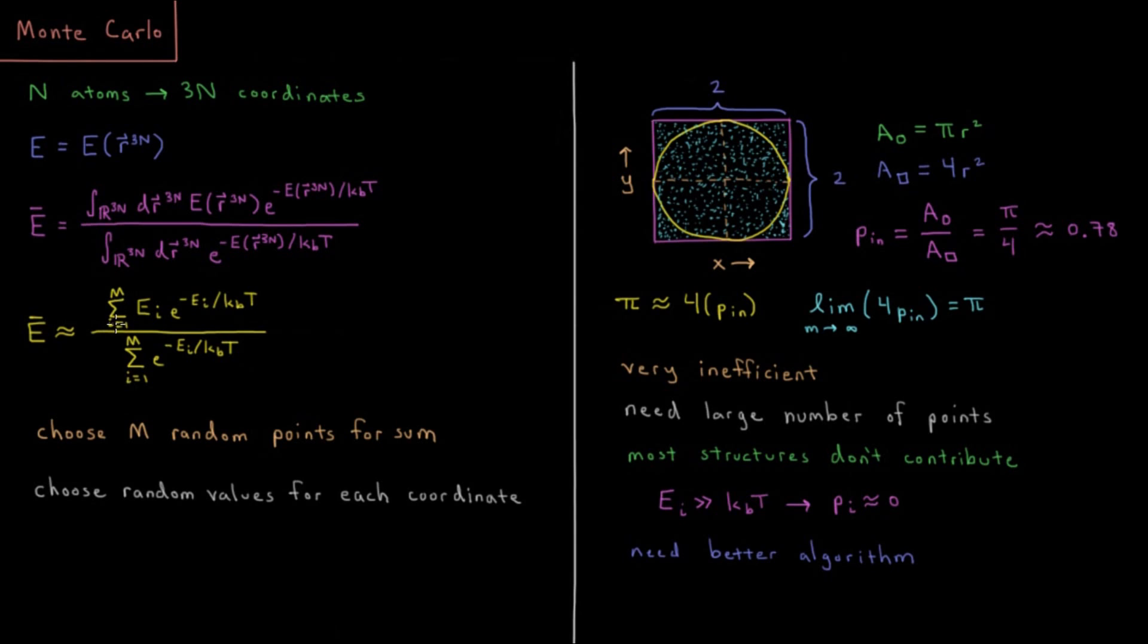You could do a grid integration where you choose basically a set of values in every coordinate. But as we mentioned that becomes very difficult very quickly because let's say we do 10 points per coordinate and we have 100 atoms. That's 300 coordinates. That's 10 to the 300. That's completely impossible to do. So instead of doing this over some grid, let's just choose a bunch of random points. Let's choose M random points to complete this average and just hope that that approximation is pretty good relative to our exact answer.